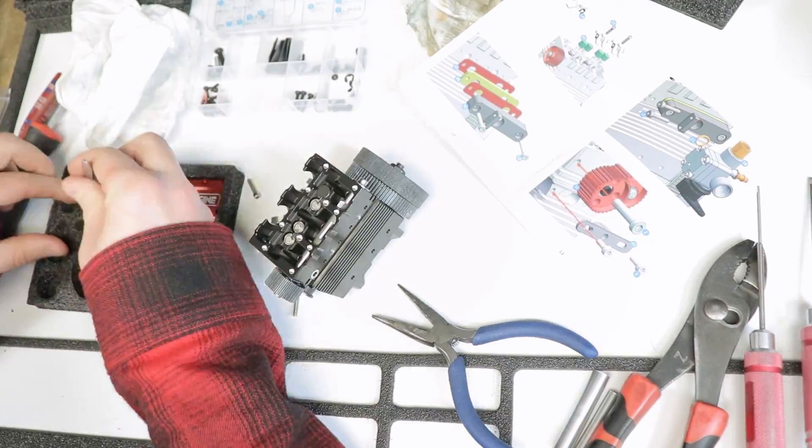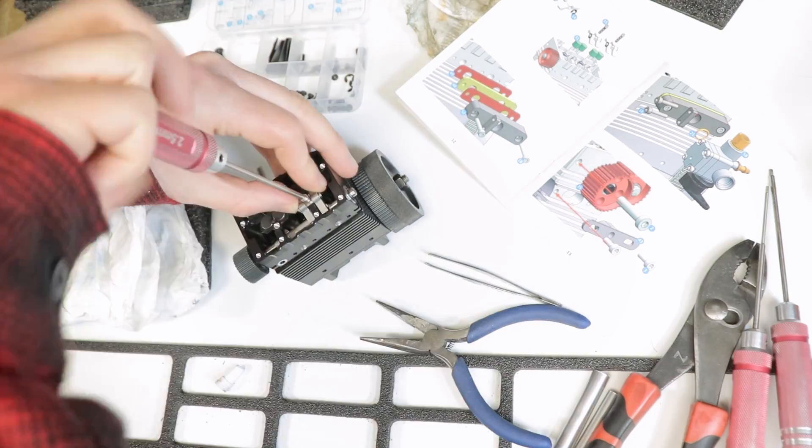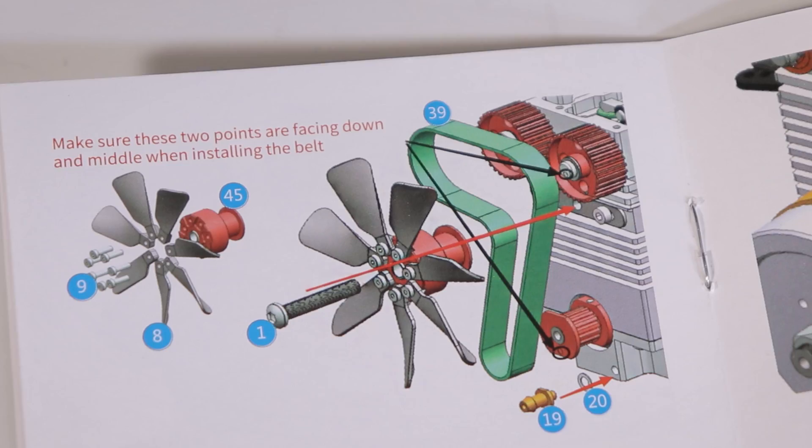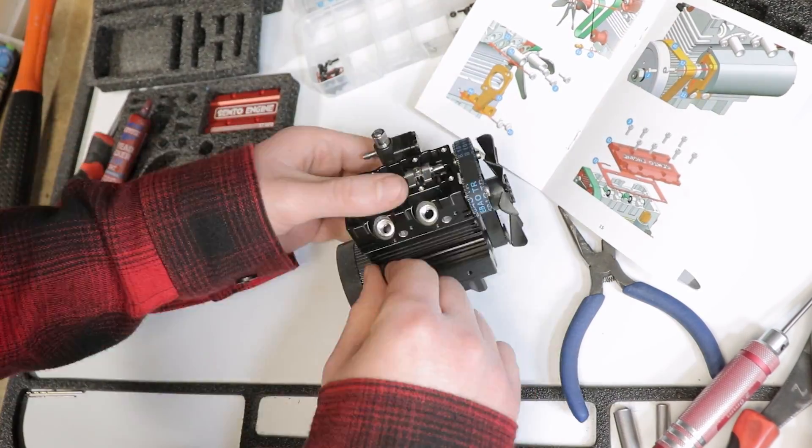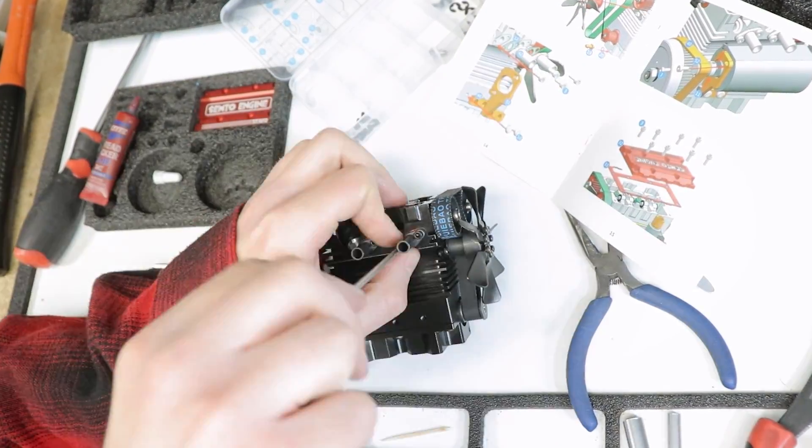Pay close attention to the orientation and alignment of certain components. For example, make sure that the camshaft and crankshaft are correctly aligned by positioning the two dots on the pulleys correctly. Some components such as the seals and the bearings were understandably quite a snug fit, but with a little persuasion they always fit well into place.